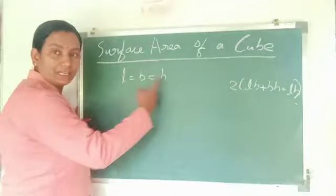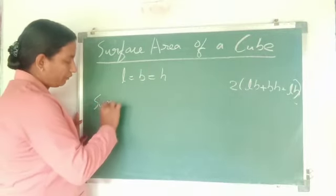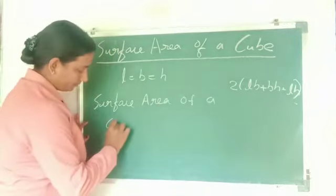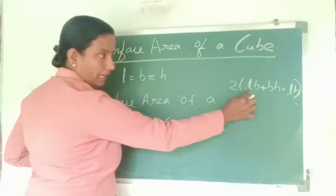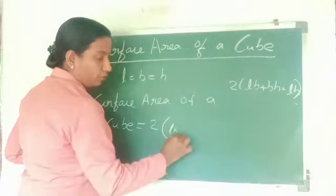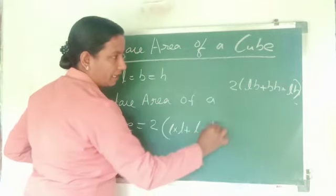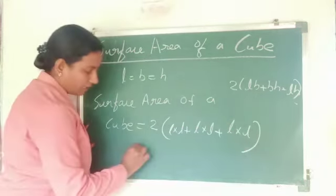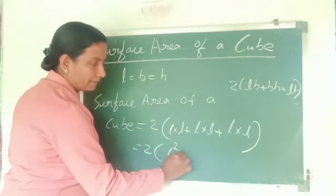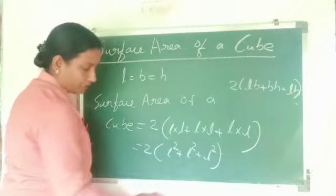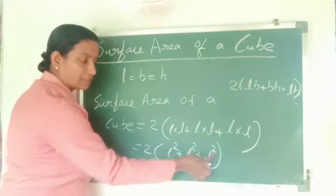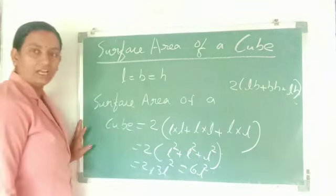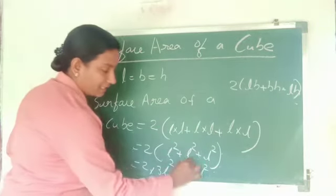Here L equals B equals H. So the surface area of a cube equals 2 into (L×L + L×L + L×L), which is 2 into (L² + L² + L²), that is 2 into 3L², which equals 6L². Therefore, surface area of a cube is equal to 6L².